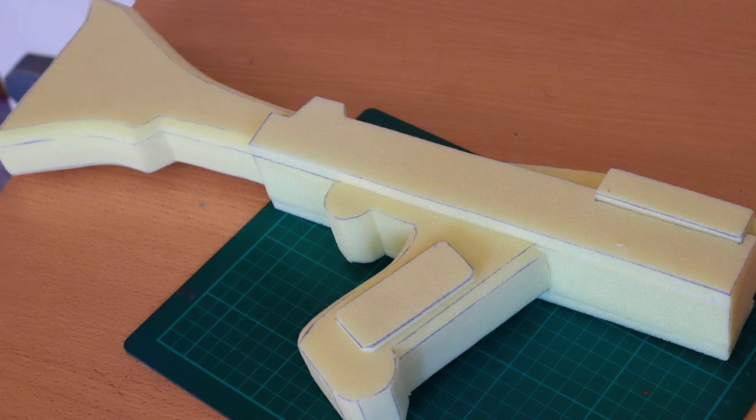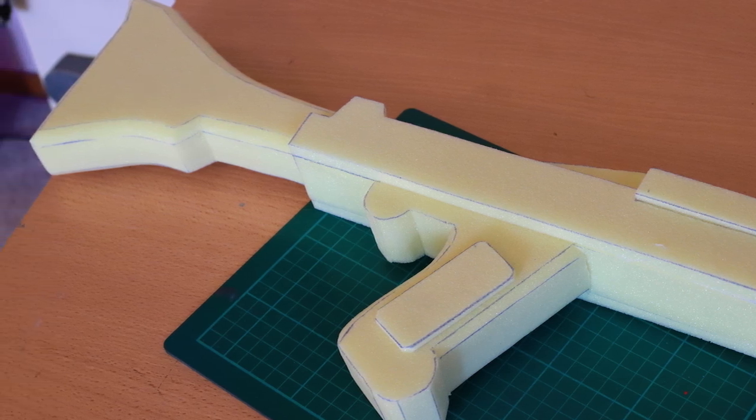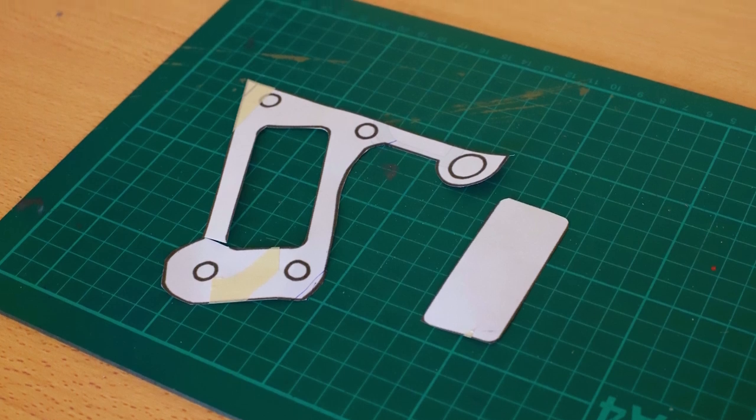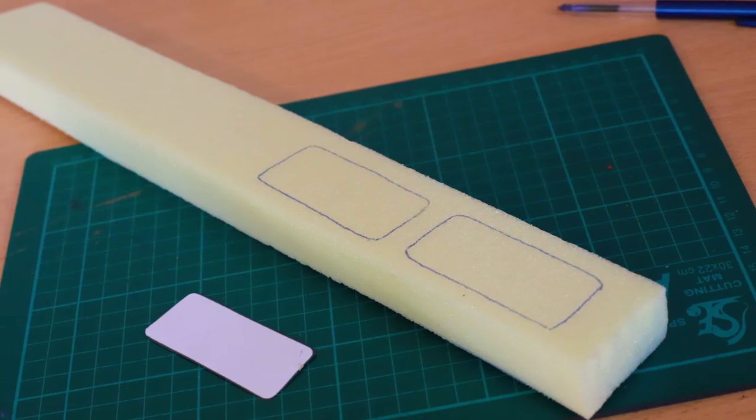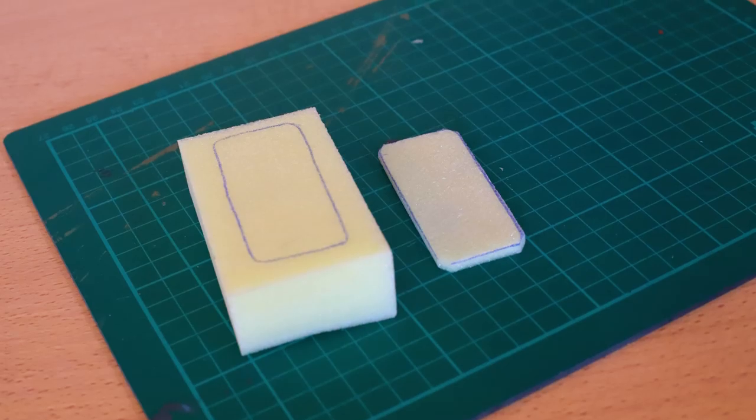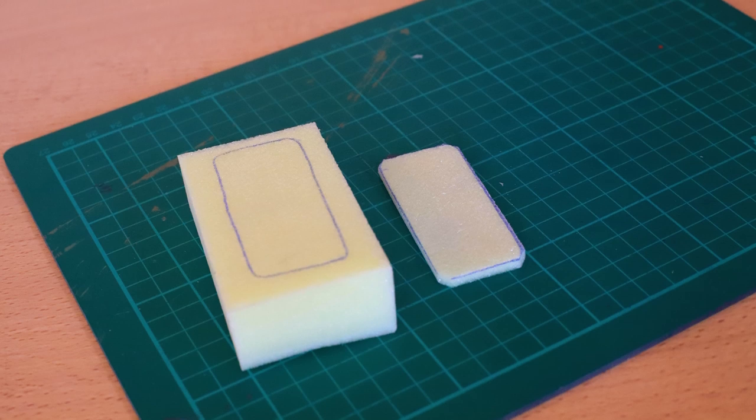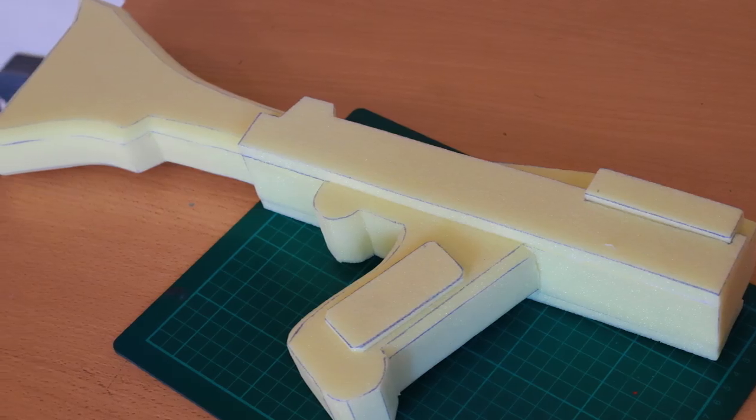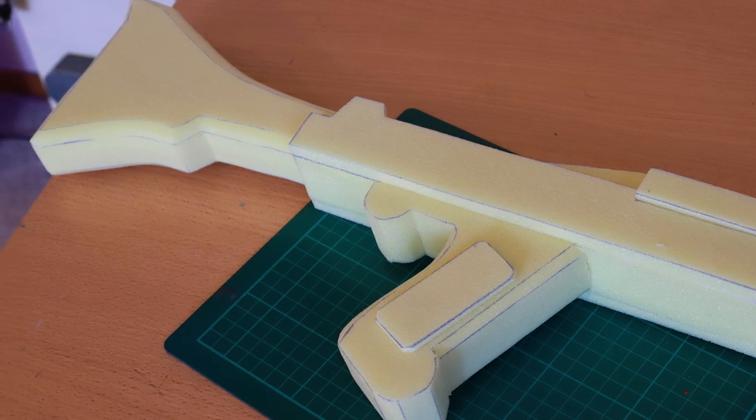And that pretty much wraps up the majority of what we need for this main build. The only thing we're going to add, which is optional, is this little piece that sits on the actual handle itself. Now, I'm cutting these out to be additional layers. You can simply groove this in if you want it to be a part of a handle or you can cut it away, make it an indented layer. That's up to you. I just like the extra thickness and the 3D look of it.